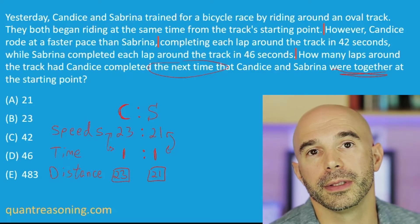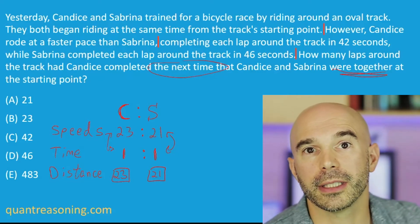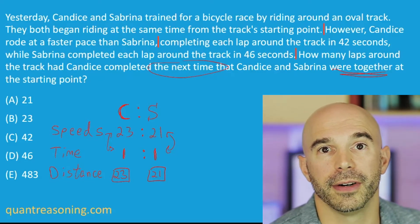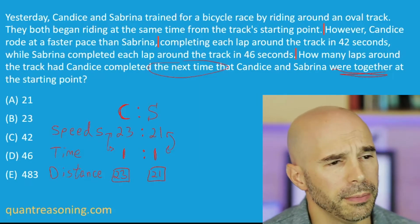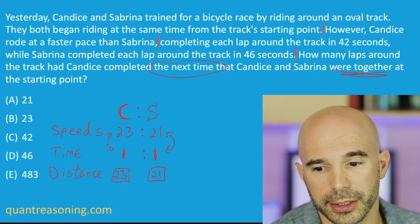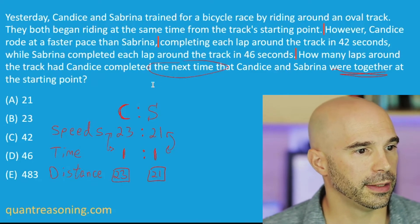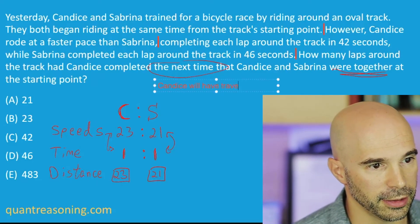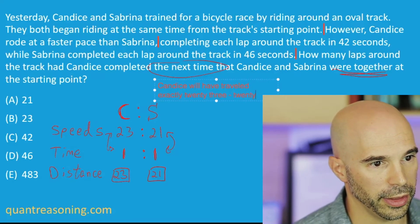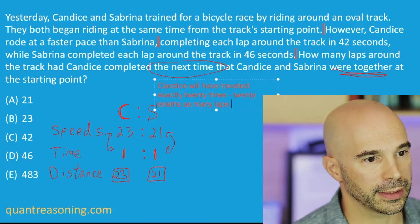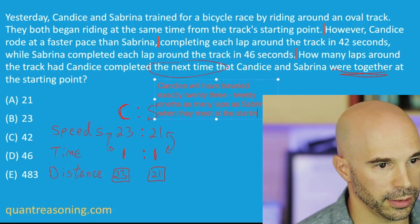If the ratio was a lot easier, it would be an easier question, because people could intuitively say: if Candice is three times as fast as Sabrina, then Candice will have traveled three times as far, because they traveled for the same amount of time. The concept is the same — just the numbers are not as nice. So our big inference is that Candice will have traveled exactly 23/21ths as many laps as Sabrina when they next meet at the starting point.